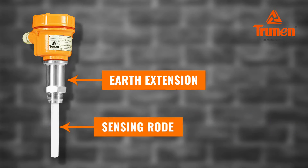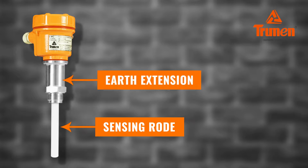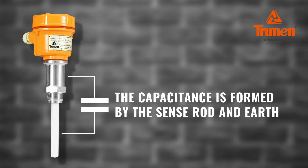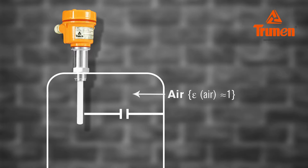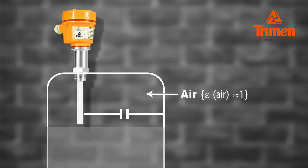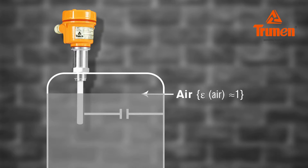Capacitance is formed by the sense rod and earth. When no material is present, the capacitance is analogically a multiple of probe dimension and dielectric constants of air. When material is present, the capacitance gets multiplied by the dielectric constants of the material.